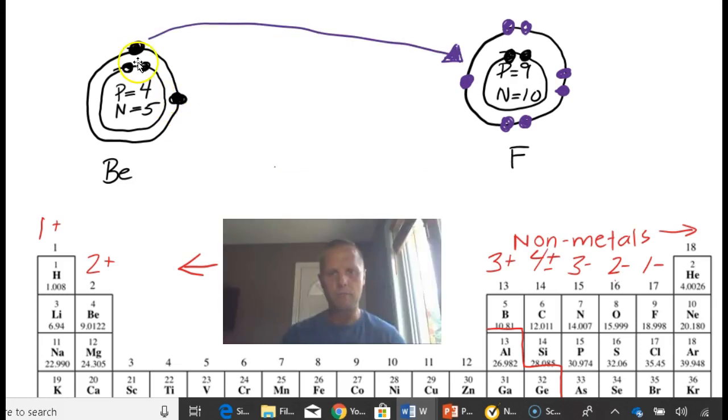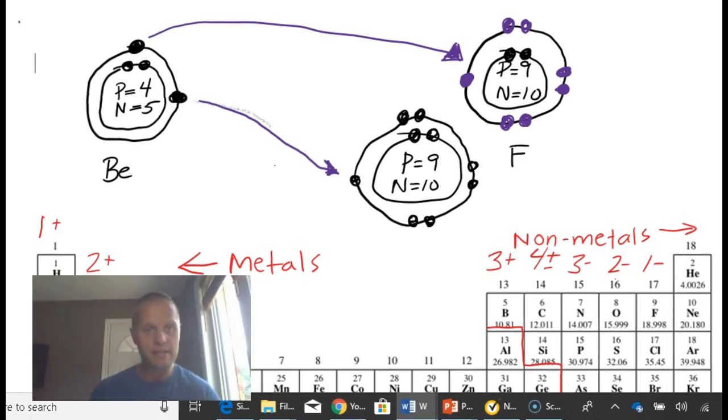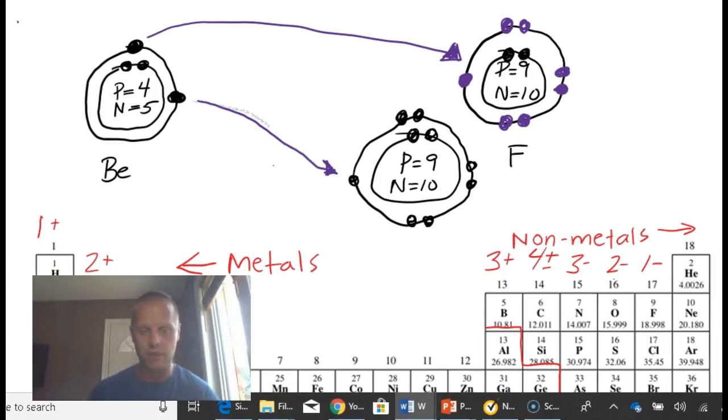Now, what can happen is that these guys can actually help each other out because beryllium wants to give up electrons, and fluorine wants to take electrons. So beryllium will give up its one electron to fluorine, and fluorine is actually going to become satisfied at this point. But you can see that beryllium still doesn't have a full shell. It still has to get rid of this electron, so we have to add another fluorine.